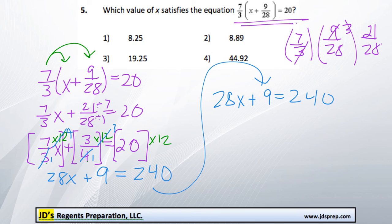we can subtract 9 from both sides, and we'll get 28x equals 231.